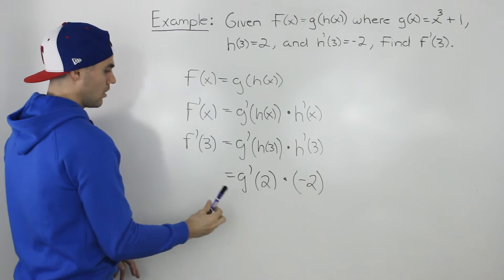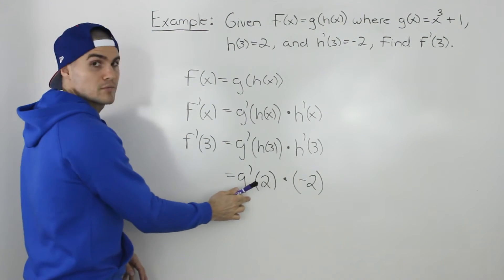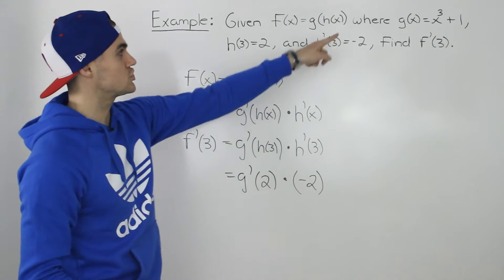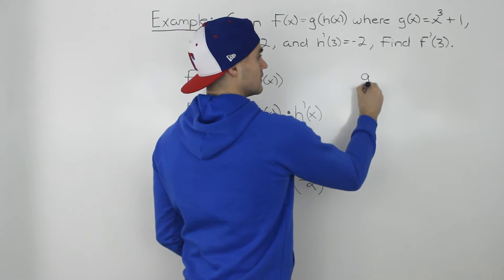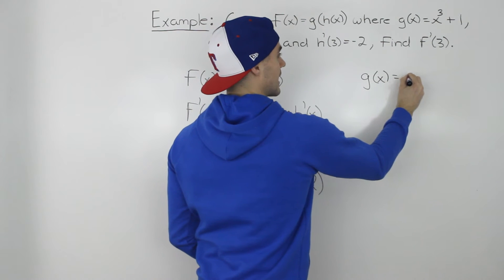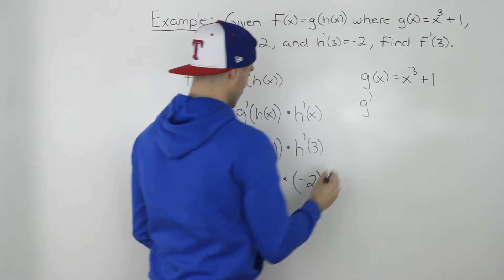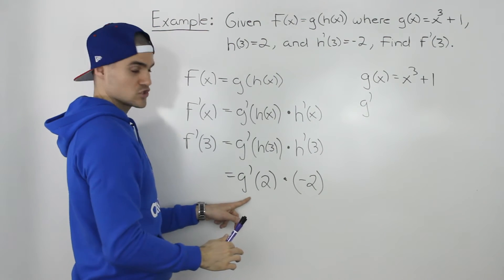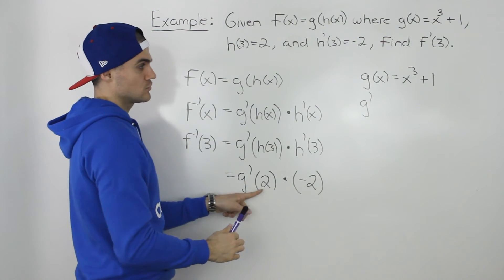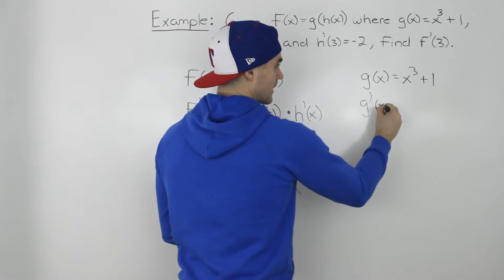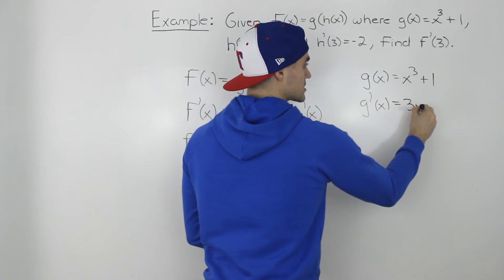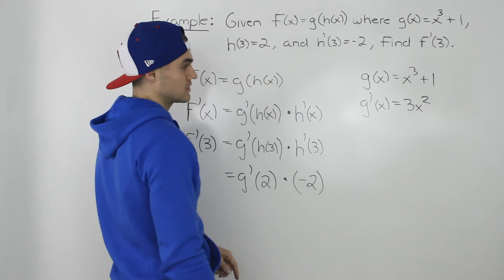All that's left to find is g'(2). Notice g(x) is given as x³ + 1. The derivative of it, because we have to find the derivative of g at x = 2, is g'(x) = 3x² if we apply the power rule to that first expression.